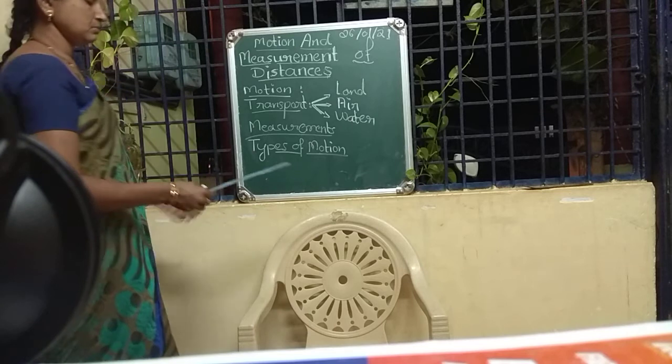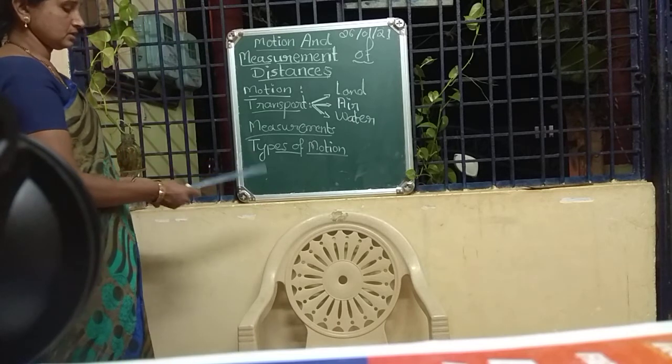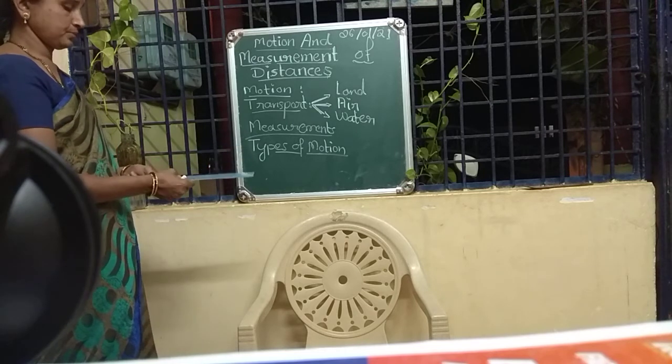Any distance is measured in a unit. Small distances are measured in centimeters and millimeters using a scale or tape. Longer distances are measured in meters and kilometers — for example, from village to city, from one city to another city, like Bangalore to Delhi or Bangalore to Hubli. These are measured in kilometers.